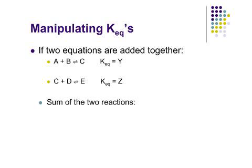So let's say that we have this first reaction. A plus B is in equilibrium with C, and I've written A and B as the reactants and C as the product. I know that KEQ, which I'm calling Y here, is equal to the concentration of C over A times B.